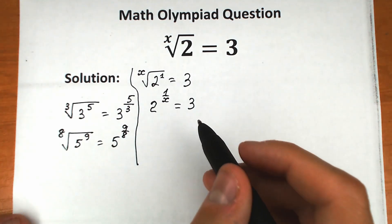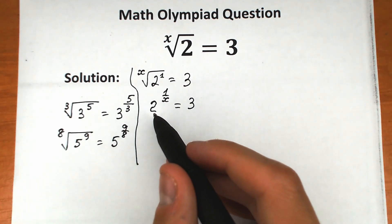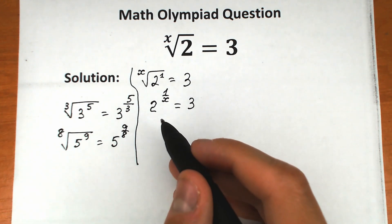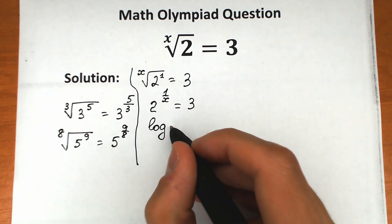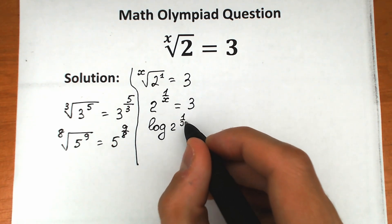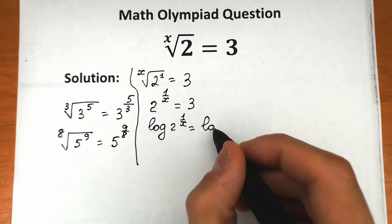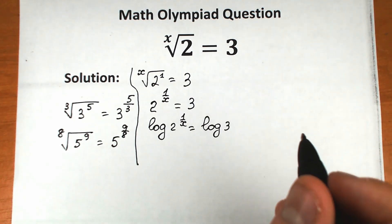Now, what are we going to do? We're going to apply log on both sides - log or natural log doesn't matter. Let's go with log. So we have log of 2 to the power 1 over x equals log 3.